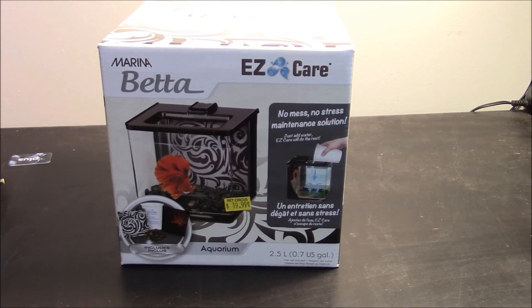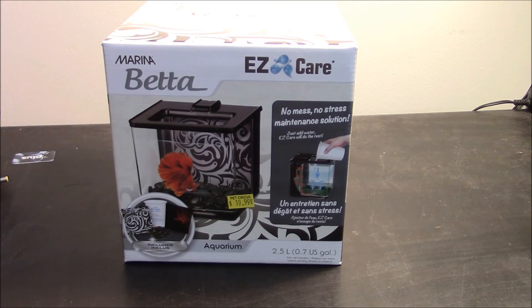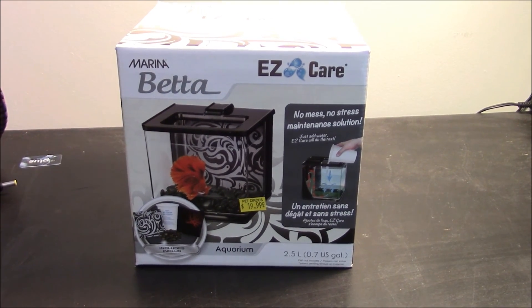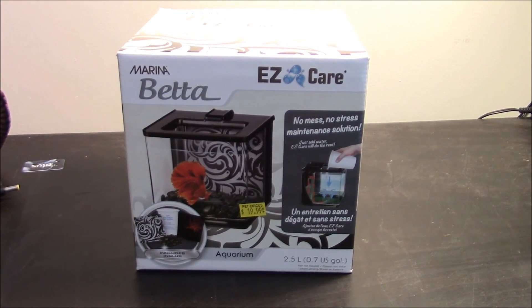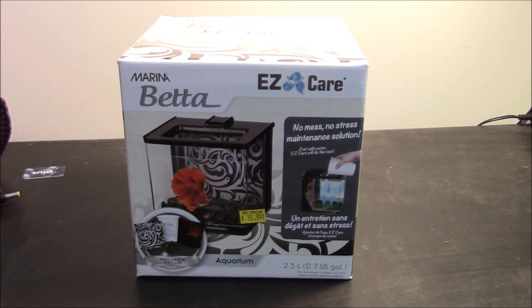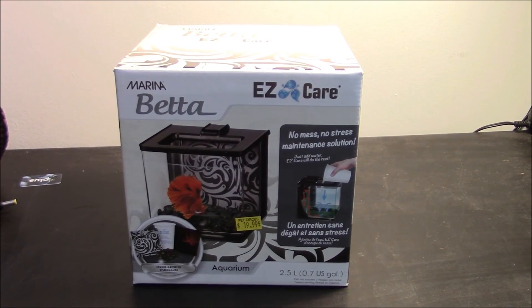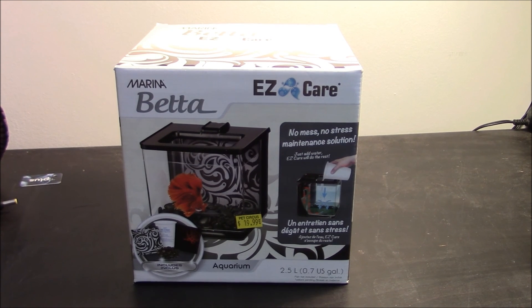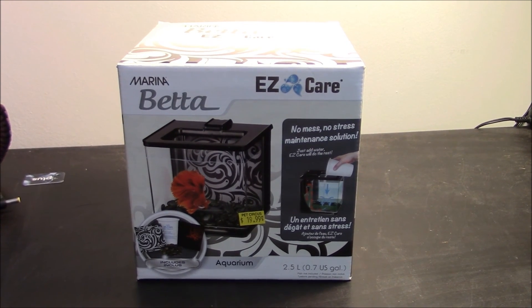First thing, let's take a look at the box. As you can see in the bottom right corner there, it's a 0.7 gallon aquarium. So it's actually not that small. The other Marina Beta aquariums that they used to make, they still make, they're a little bit smaller, they're about half a gallon.